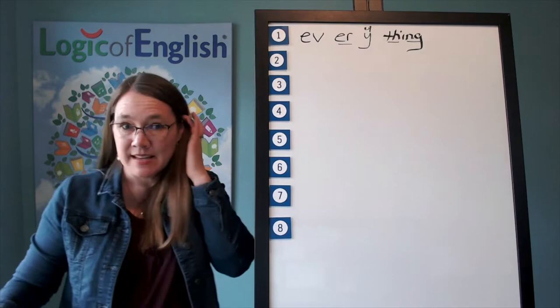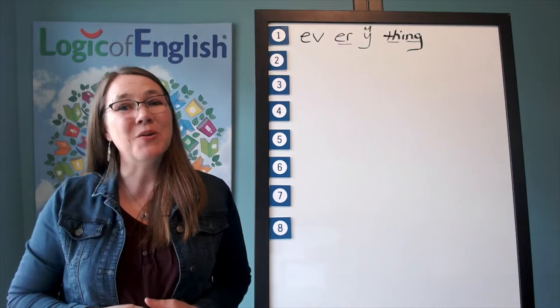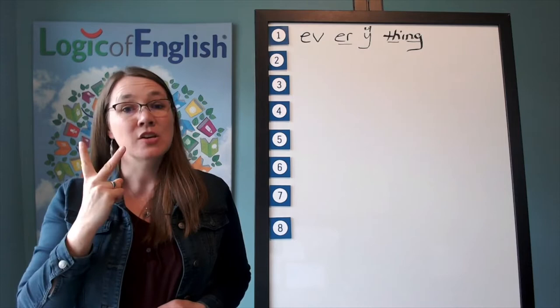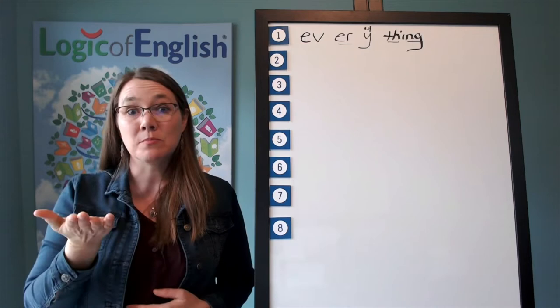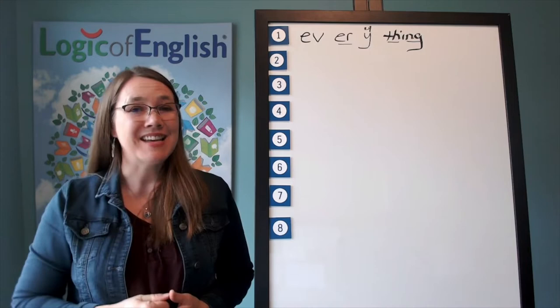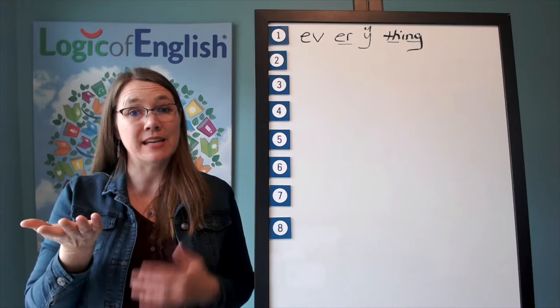The next word is began. We began in September. Began. Go ahead and say began. How many syllables? Two. We will say to spell be-gan. What will we say to spell? Be-gan. Let's sound it out. The first syllable is be, B-E. The second syllable is gan, G-A-N.